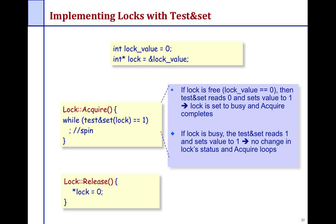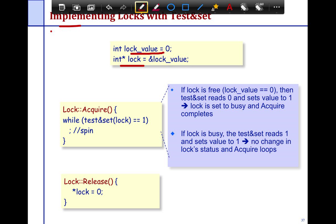Lock release is a very simple operation — all you do is set the lock value back to free, which is zero. Note that the initial value of the lock is zero. If you started with one, everything would change — you could have the situation where one thread spins on zero and the other releases it, or vice versa.